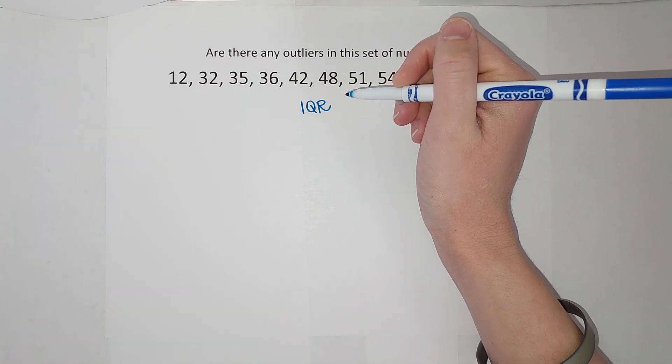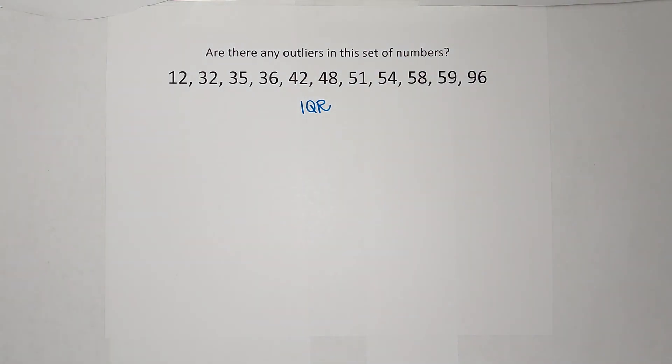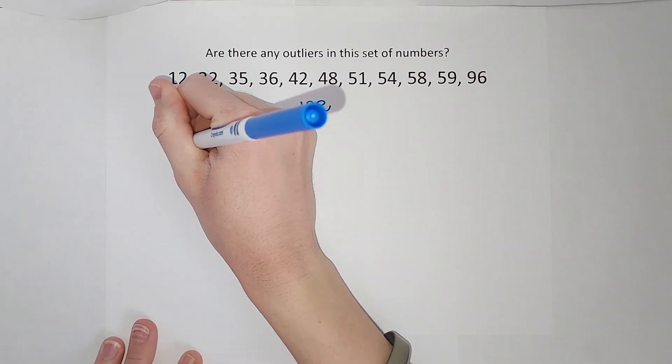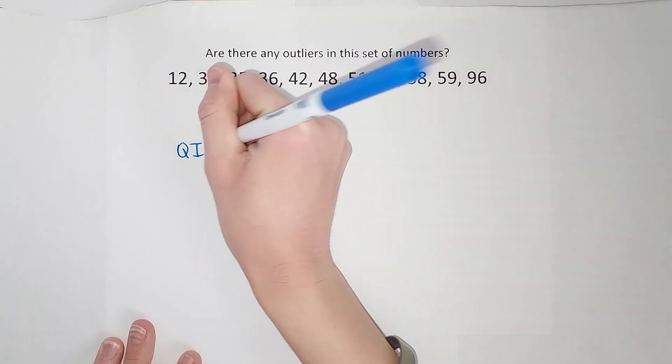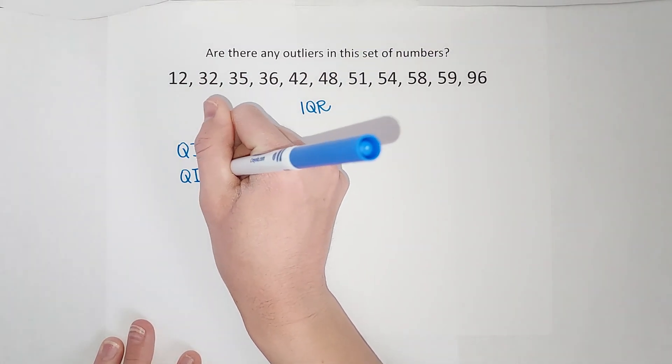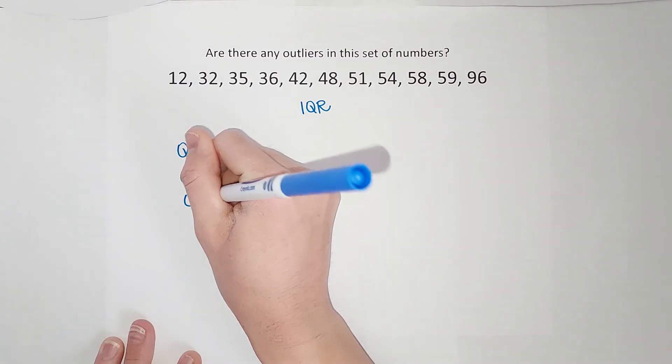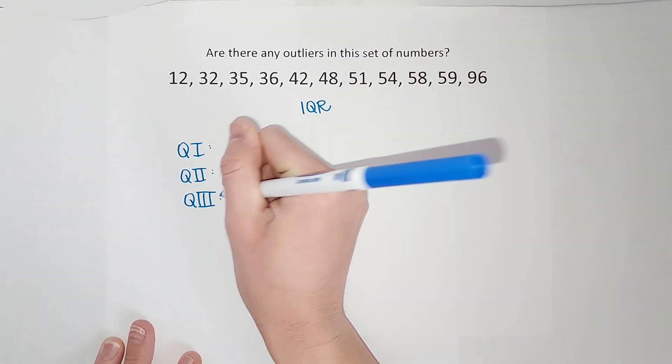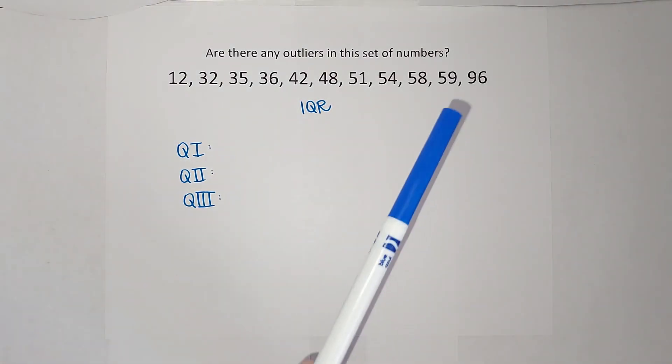So my inner quartile range is my third quartile minus my first quartile. So we need to find our quartiles. I'm guessing if you've been making box and whisker plots, you have been doing this. But if you watch this and you're like, oh, I need some more help finding quartiles, I will link a video in the corner.